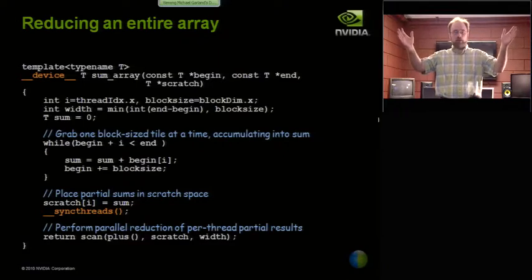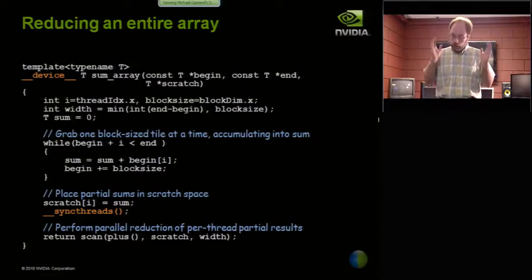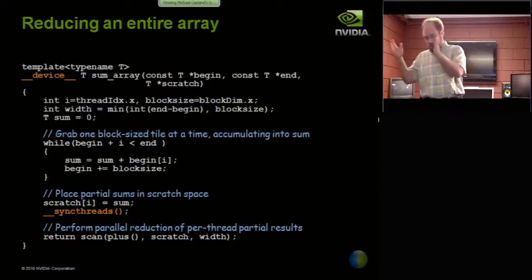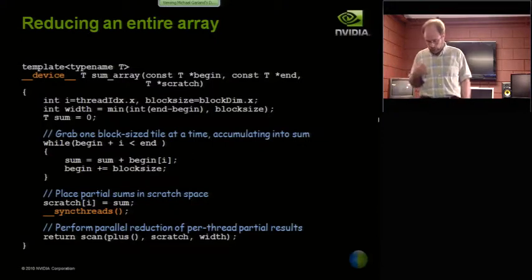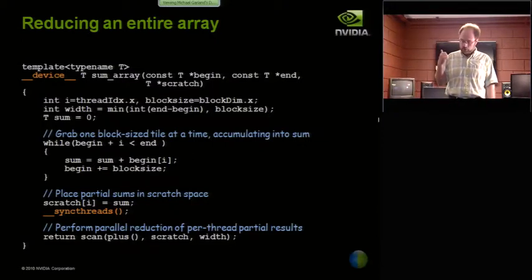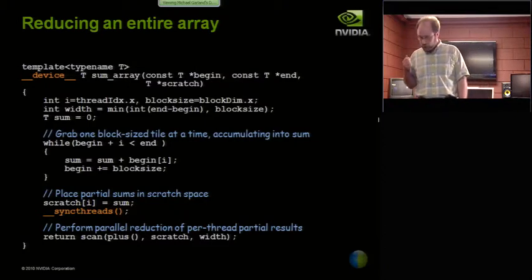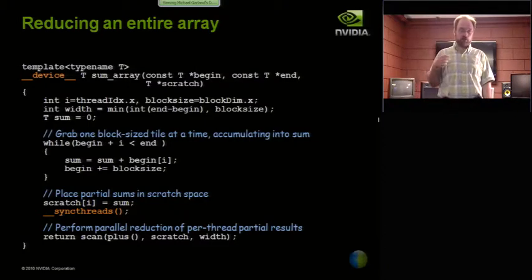If it's given an array with lots of elements, it picks up, first of all, it keeps a running sum at the top, which you'll see is initialized to zero. Then it loops over the tiles of data. So it picks up the first B elements, and every thread sums its value into its running sum. And then it picks up the next B elements, and every thread sums its element into its running sum. And then at the end, it makes a call to, well, I guess in this case, I have it called scan, but it could call reduction, to compute the total sum of all the elements in the block.